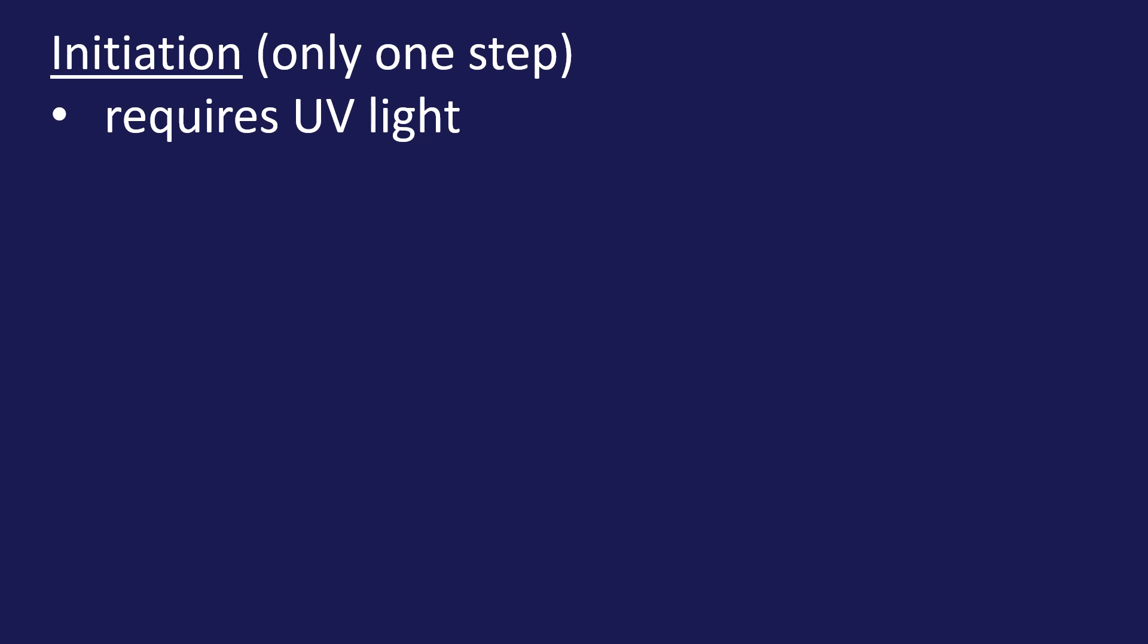So the first sequence or the first step is known as the initiation step. And this step requires UV light. And there's only one step in this section. So the halogen, I'm going to stick with bromine. So the initiation takes the halogen and turns it into two halogen free radicals. So we end up with Br2 makes two Br dot. And it's important to show this dot because I'm showing that it's a free radical.